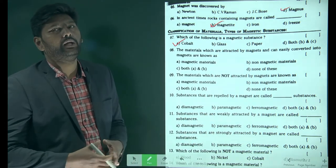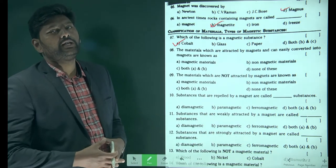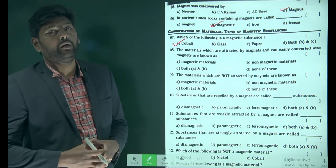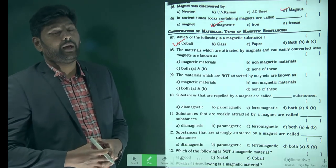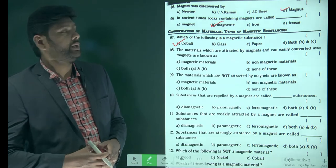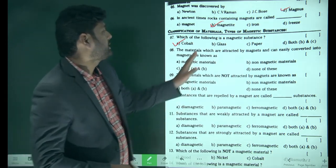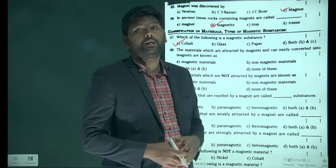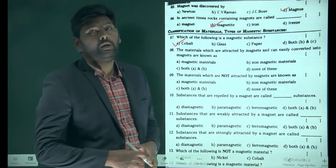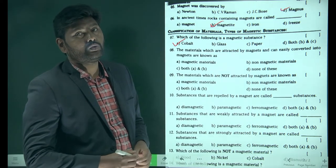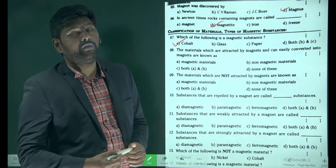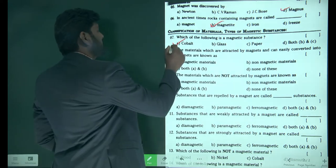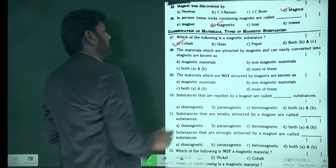Glass and paper are diamagnetic materials. Cobalt is a ferromagnetic material, so cobalt is our answer.